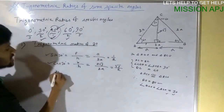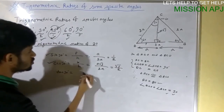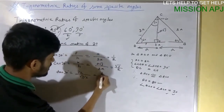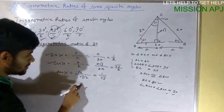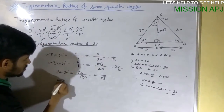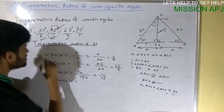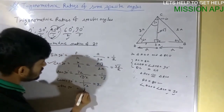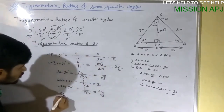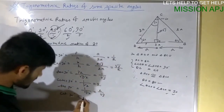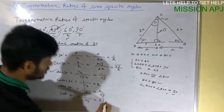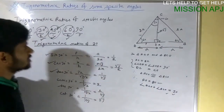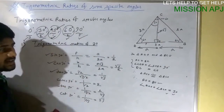Now we calculate the remaining ratios for 30°. Tan 30° = sin 30° / cos 30° = (1/2) / (√3/2) = 1/√3. Cosec 30° = 1/sin 30° = 1/(1/2) = 2. Sec 30° = 1/cos 30° = 1/(√3/2) = 2/√3. Cot 30° = 1/tan 30° = 1/(1/√3) = √3. We have now obtained the trigonometric ratios for both 30° and 60°. Next we will find the ratios for 0° and 90°.